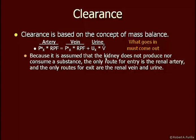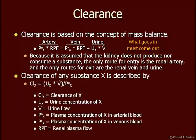We're also assuming that the kidney does not produce or consume the substance. So the only route for entry is the renal artery, and the only route for exit is either the renal vein or the urine or both. The clearance of any substance X is then described by this equation: the clearance of X equals the urine concentration of X times urine flow divided by the arterial plasma concentration of that substance X.